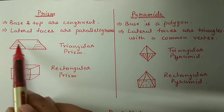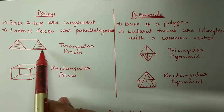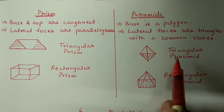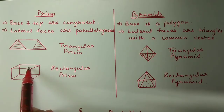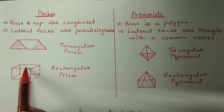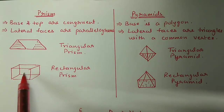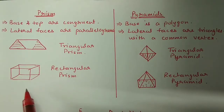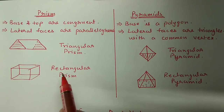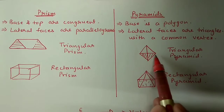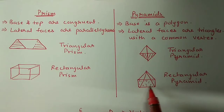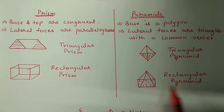If the base is a triangle then we will call it a triangular pyramid. If the base is a rectangle then we will call it a rectangular prism. Same way for pyramids also - if base is a triangle then triangular pyramid, if base is a rectangle then rectangular pyramid, if base is a pentagon then pentagonal pyramid.